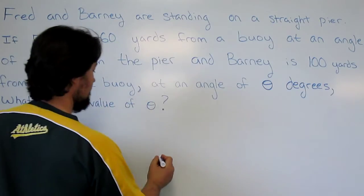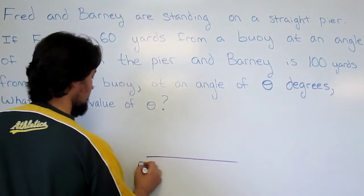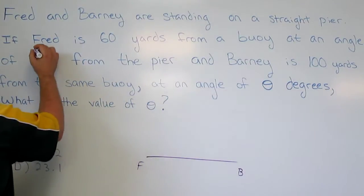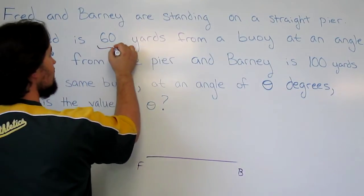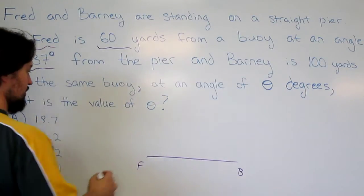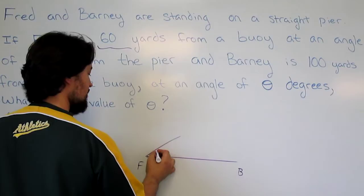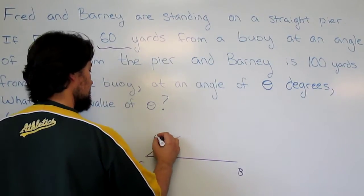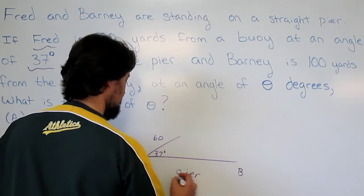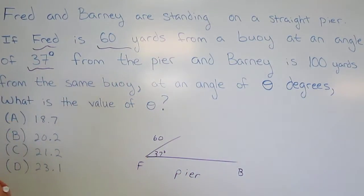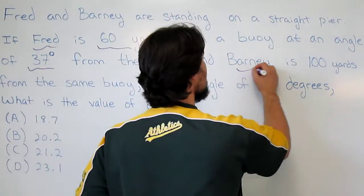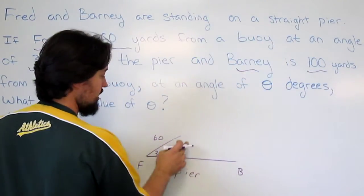All right, methodically: here's Fred, here's Barney. So we've got Fred is 60 yards at 37 degrees - that's Fred. Okay, 37 degrees, about 60. Here's our pier. Now Barney is 100 yards with an unknown angle, so Barney is 100. Here's Barney, we're going to make him longer.